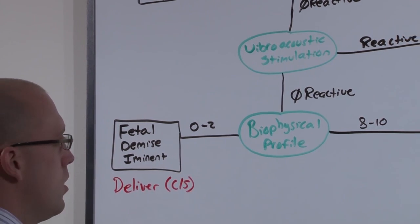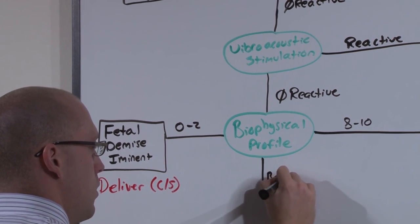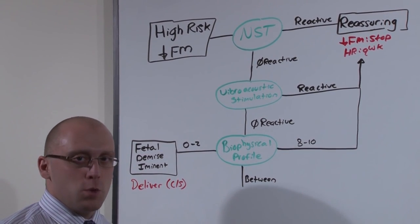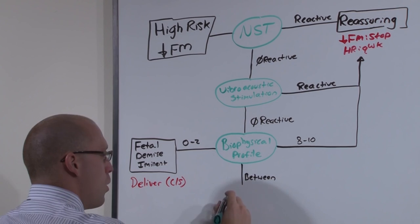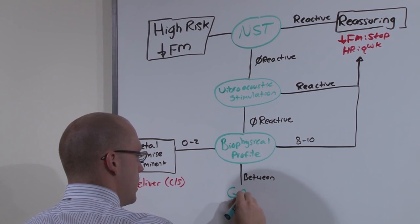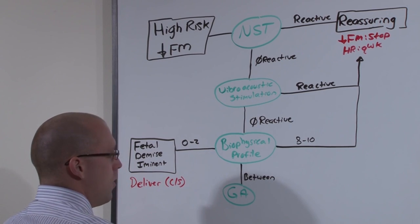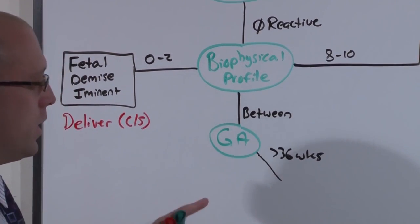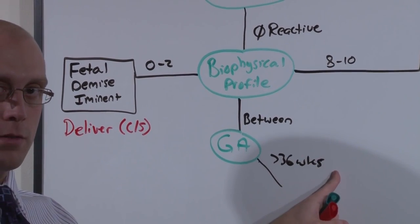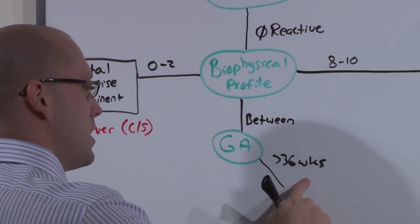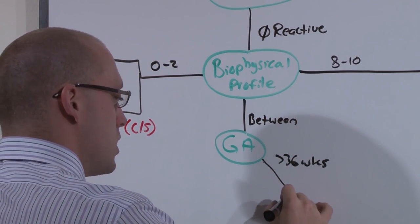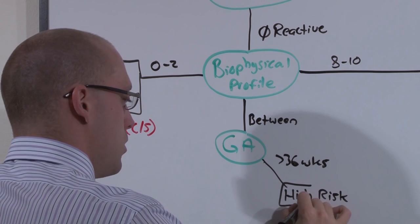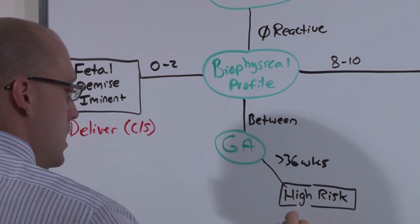If you're in between — any score not 2 or less, or 8 or greater — you're not sure if baby is doing well or not. You have to decide based on gestational age. If you're on the fence and baby is term — greater than 36 weeks — you'll get very little benefit from staying in longer. So if greater than 36 weeks and on the fence, just deliver. There is higher risk staying in at this point than coming out.